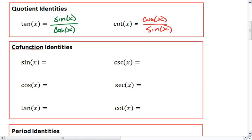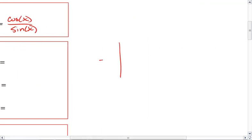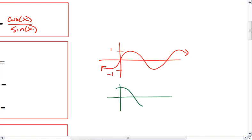Next, we're going to talk about cofunction identities. These are the identities that, for example, we know sine looks like this, going up to positive 1 and down to negative 1.